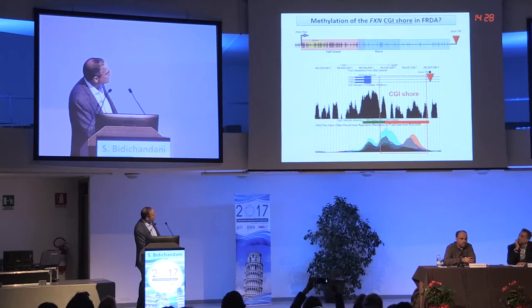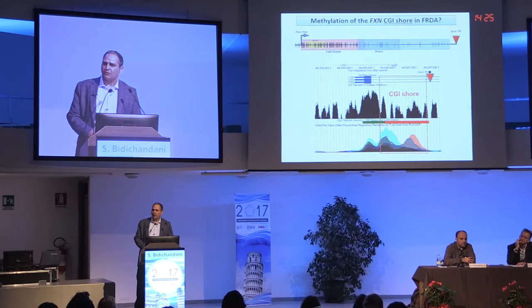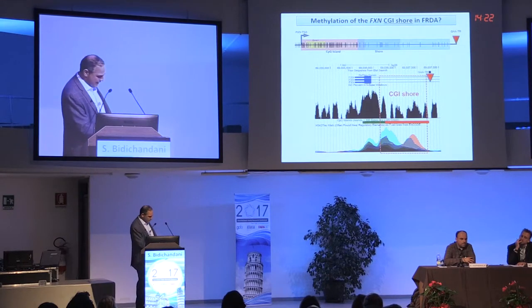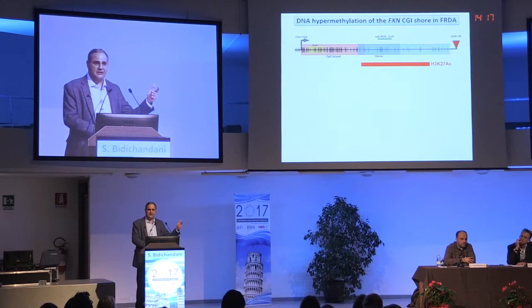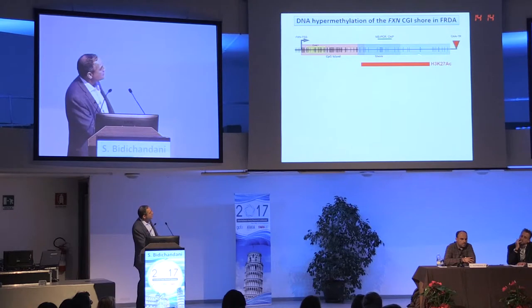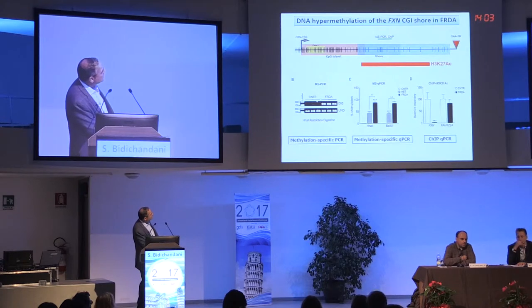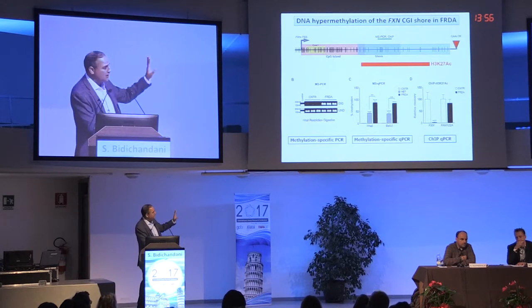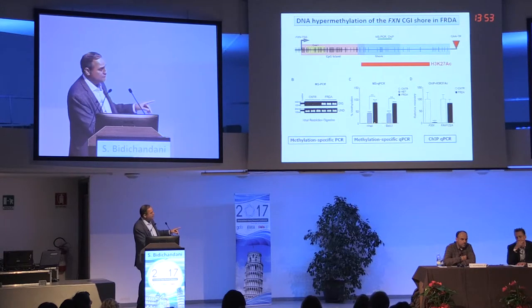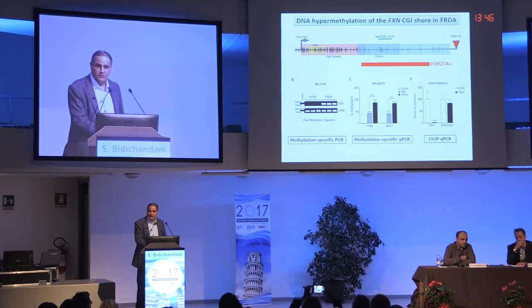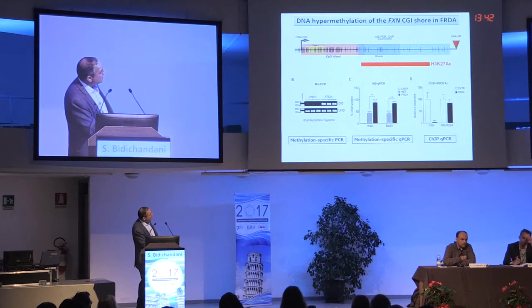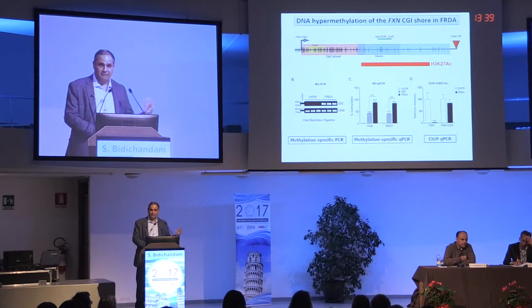We decided to test the shore for two things: whether there's methylation there, and whether there's hypoacetylation of H3K27. This is a methylation-specific PCR with three patients and three controls — you see a day-and-night difference, though this is not a quantitative assay. When you do a quantitative version, you see very little methylation in controls, about half the methylation in heterozygous carriers — people with one expansion — and then complete methylation in people who have homozygous expansions.